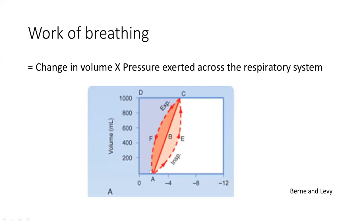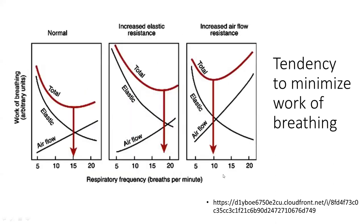This graph shows the work of breathing. The compliance graph includes areas representing the elastic resistance and the resistance to airflow. The work of breathing is the entire area given by the formula: change in volume multiplied by the pressure exerted across the system. The work of breathing is minimal at the point of intersection of the elastic resistance curve and the airflow resistance curve. As compliance decreases, the graph shifts and the work of breathing increases.